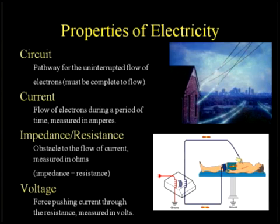Current is usually defined in amps, and that describes the rate of flow of electrons or the rate of flow of the current. Impedance is basically electrical resistance — how much resistance there is to electrons passing through the tissues. In microwave terminology, that impedance would be equivalent to permissivity. And then finally, you have voltage, which is how hard you are trying to push that current along.